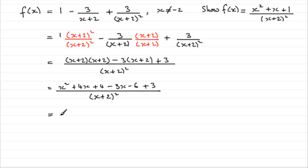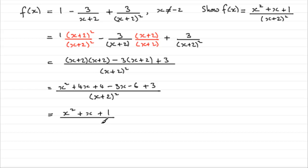We just clean up the top. We've got x squared. Then 4x minus 3x gives us plus x. And then 4 minus 6 is minus 2, add the 3, gives plus 1. So that's x squared plus x plus 1, all over x plus 2 all squared. And that's what we had to prove.